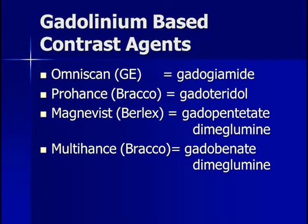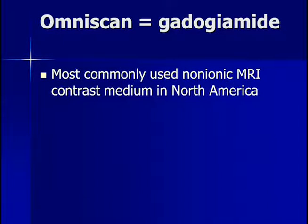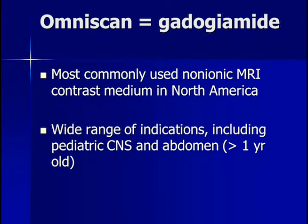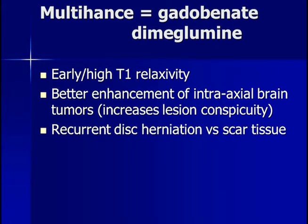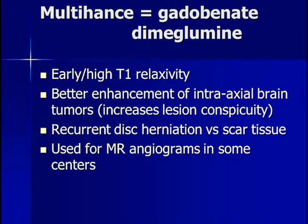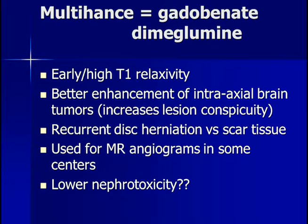Numerous gadolinium-based contrast agents are available from various companies. Most commonly used is OmniScan; we also use ProHance, Magnevist, and MultiHance. OmniScan has been most commonly used in North America for multiple purposes with a wide range of indications including pediatric CNS and abdominal imaging. MultiHance has early and high T1 relaxivity, with even better enhancement of intra-axial brain tumors compared to OmniScan, increasing conspicuity of subtle lesions. It is also useful for evaluating disc herniation versus scar tissue and for MR angiograms. Some have suggested lower nephrotoxicity with MultiHance, however this has not been proven.